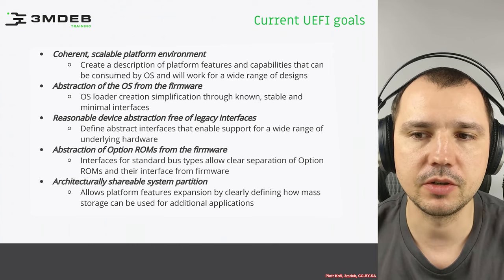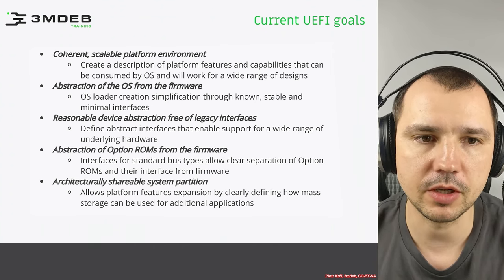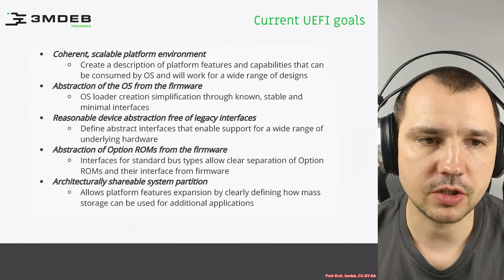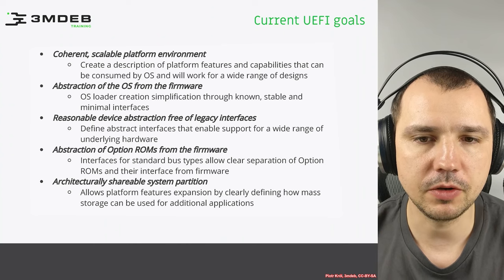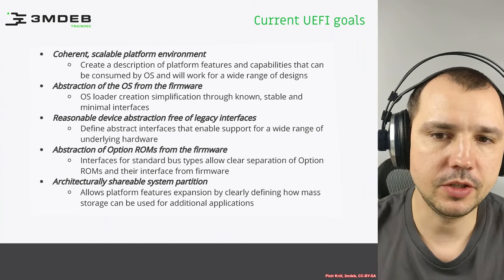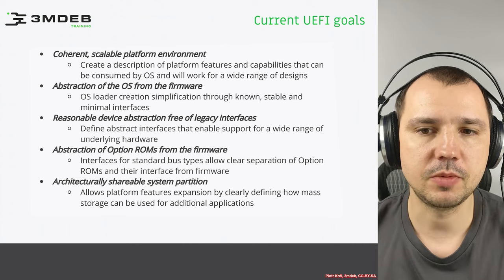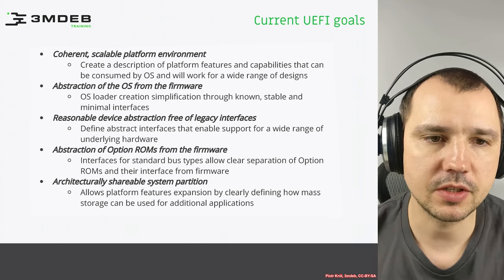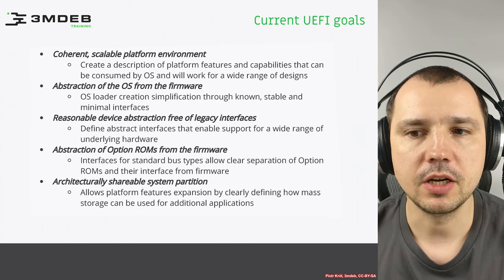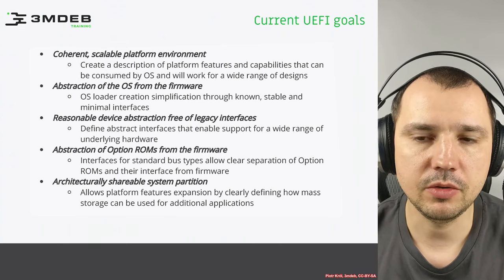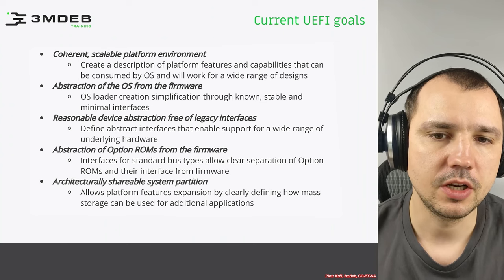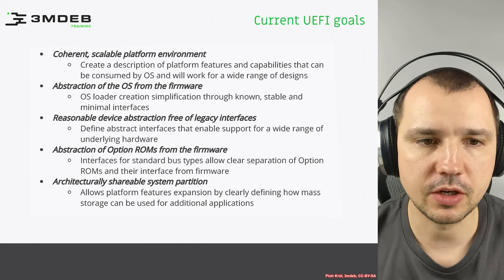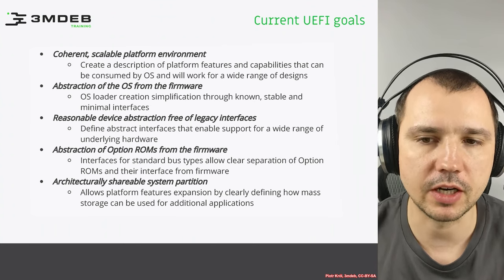The fourth goal is abstraction of option ROMs from the firmware. This goal leads to defining interfaces in the specification that can abstract standard buses like PCI, USB, and SCSI. Using those bus interfaces, there is a standard way to discover option ROMs and a standard way to consume and interact with them.